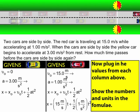Now I'm going to put in the numbers from the column above it. So when I do that for the red car, I get X is equal to 15 meters per second times time, plus 1/2 times 1 meter per second squared times T squared. I do the same thing for the other car, putting in the numbers above to get X is equal to 1/2 times 3 times T squared.